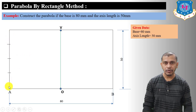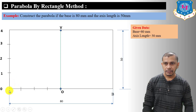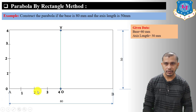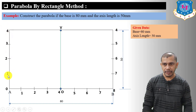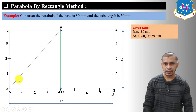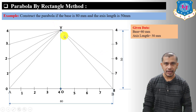Now divide the AO length into four equal divisions as well. After taking the divisions, connect these points — zero, one, two, three, four — to V. So connect point zero to V, one to V, two to V, three to V. Also connect points eight, seven, six, five to V.